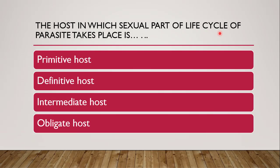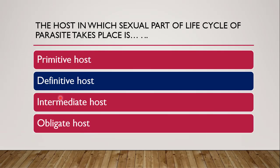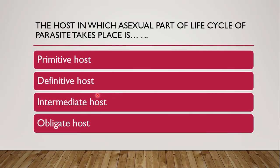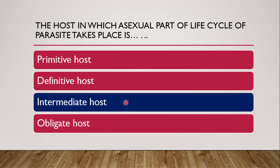Next question: the host in which the sexual part of the life cycle of a parasite takes place — whether the host is primitive host, definitive host, intermediate host, or obligate host. The correct answer is definitive host, according to the definition: it is the host in which the sexual part of the life cycle of a parasite takes place. The intermediate host is the host in which the asexual part of the life cycle of the parasite takes place.